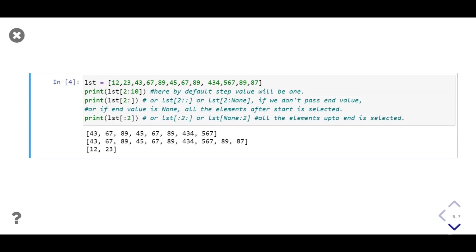In the first line of output, an 8-element list is printed. Then in the second line, a 10-element list is printed. In the last line, only a 2-element list is printed, as we only have 2 elements before index 2.